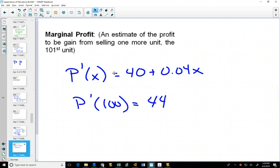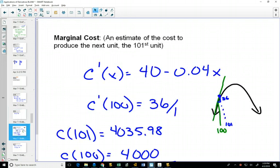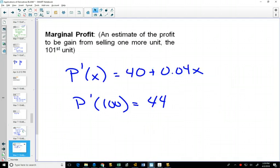And we might have known it was already going to be 44 as an estimate because our revenue stays constant at 80. And if our cost to produce the 101st one is 36, then we're going to have made $44 on that last one.